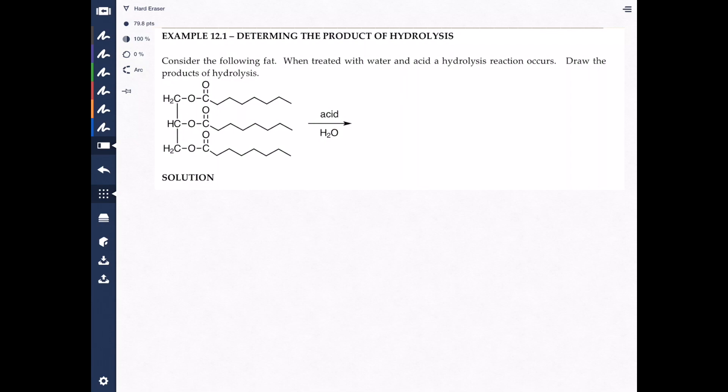Here we have a triacylglycerol undergoing a reaction with some kind of acid and water. What happens when you expose any ester to acid and water is the bond will break. Let's think about that for a minute. First of all, let's circle the ester bonds. There's one ester there, there's another one, and there's another one. So we have three ester bonds in this molecule, and esters do not like being exposed to acid and water. They break apart.